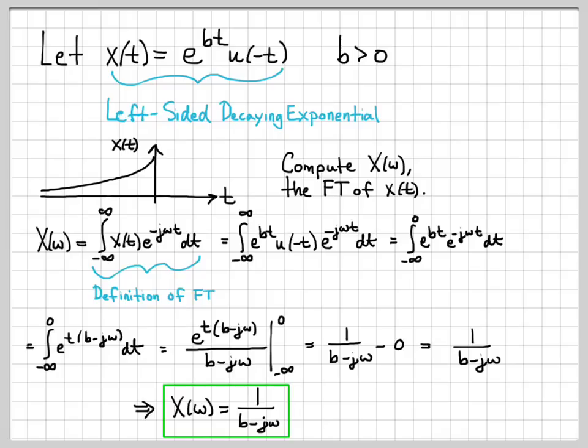We've just used the definition of the Fourier transform to show that the Fourier transform of a left-sided decaying exponential function is the function 1 over b minus j omega.